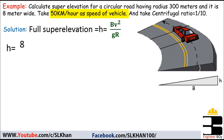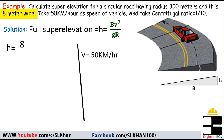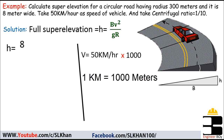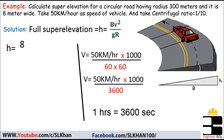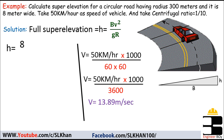The speed of 50 km/h must be converted into meters per second, because the radius, road breadth, and acceleration are all in meters. To convert 50 km/h into m/s, multiply by 1000 (since 1 km = 1000 m) and divide by 3600 (since 1 hour = 3600 seconds). Doing the math gives us a speed of 13.89 m/s.